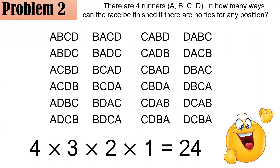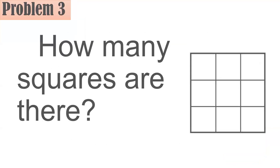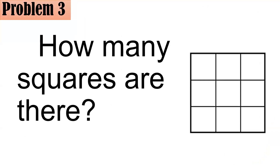And if you got this right, again, congratulations. Problem three: how many squares are there in this figure? We assume this is a three-by-three square, and that each individual quadrilateral is in fact a square.